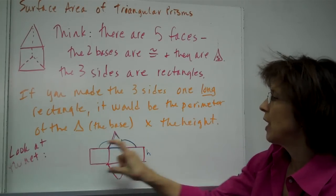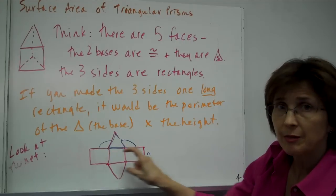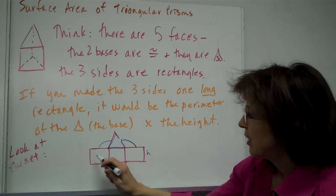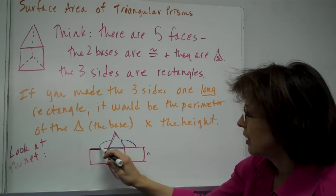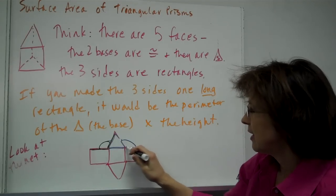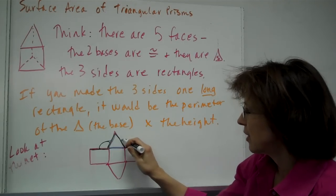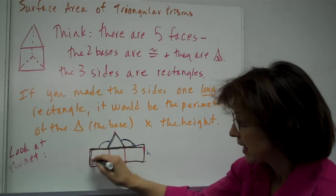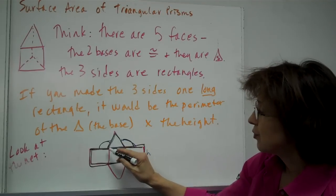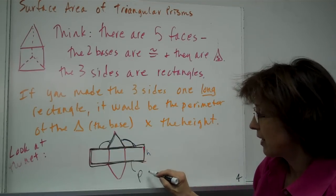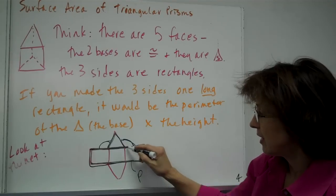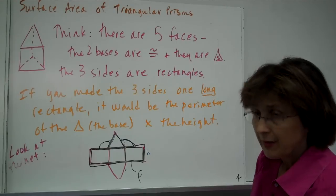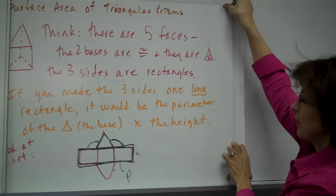If you made the three sides one long rectangle, like you'll see on some of the nets, it would be the perimeter of the triangle times the height. Each side of that long rectangle matches up to a side of the triangle — this side matches up to this side, that side matches up to that side. So this long rectangle representing all the lateral sides of the triangular prism is really the perimeter of the triangle, and the height is the side that connects the two triangles together.